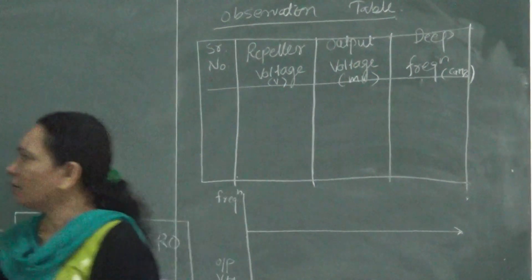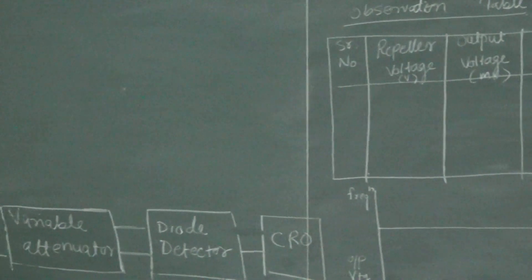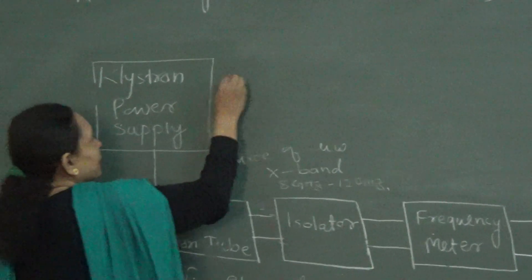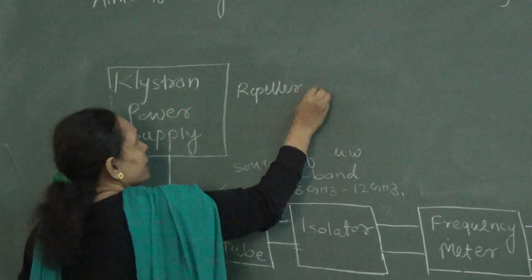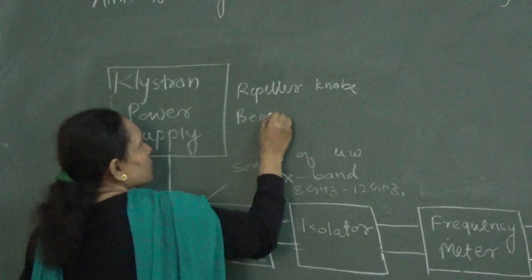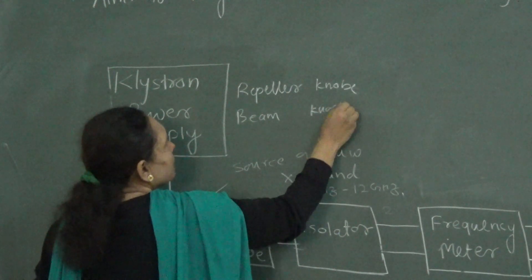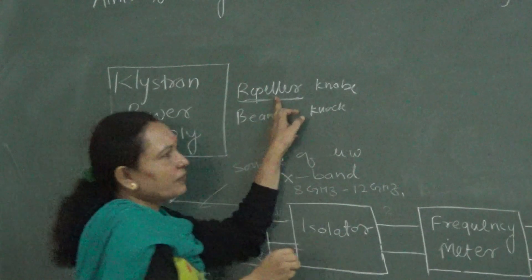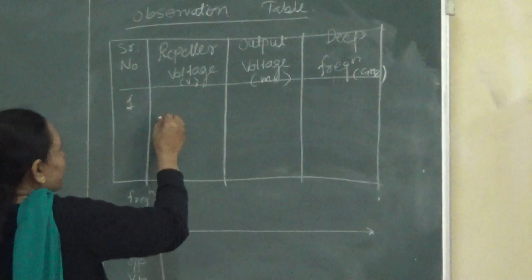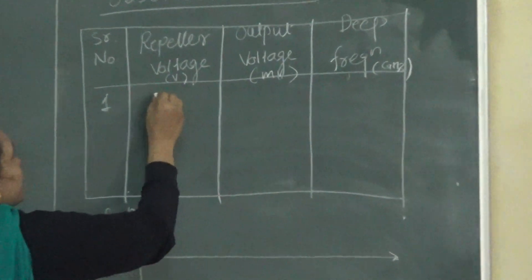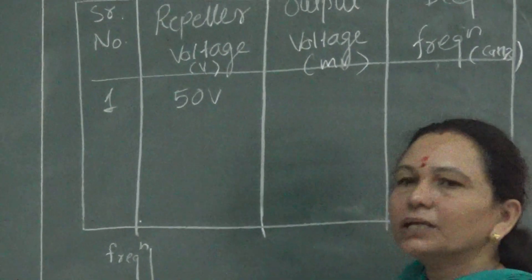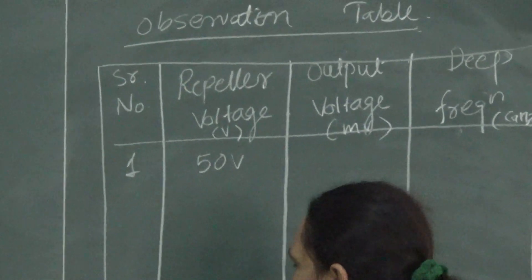Initially we apply a signal from the klystron power supply. From this power supply we control the repeller voltage knob. There are two knobs — one is the repeller knob and the second is the beam voltage knob. First, we set the repeller voltage to, say, 50 volts. For this 50 volts we observe the output on the CRO and get a square wave type of output. We then measure the amplitude of the available output voltage.